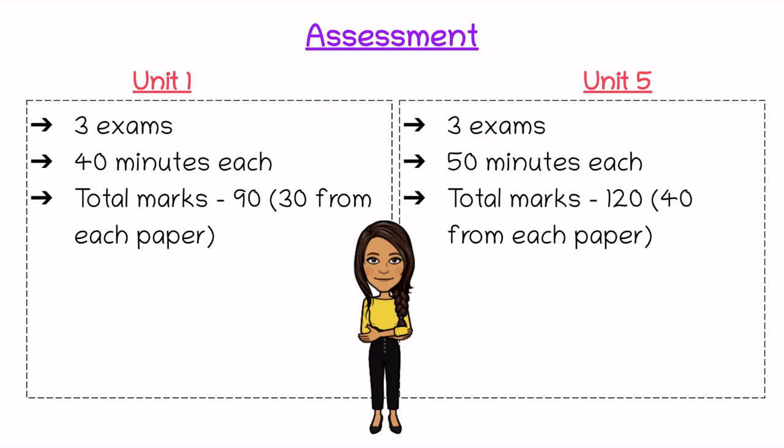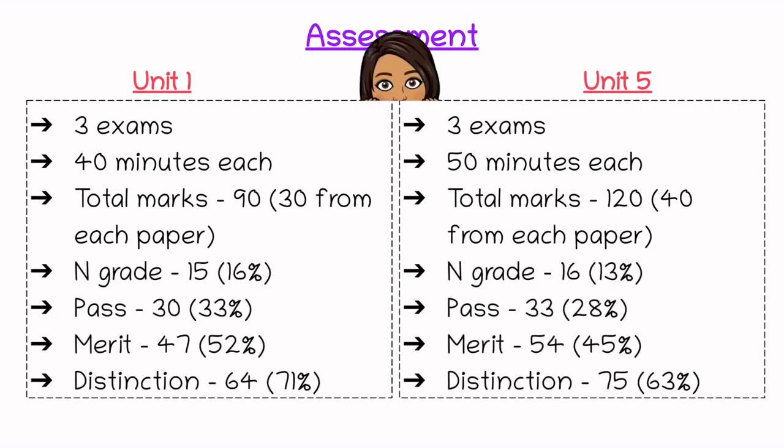In Unit 1 you need to get a total of 30 marks out of 90 to achieve a pass. To get a merit you need around 50%, and to get a distinction you need around 65 marks, which is around 70%. The Unit 5 pass grade is around 33 out of 120, the merit is around 54 out of 120, and the distinction is around 75 out of 120.